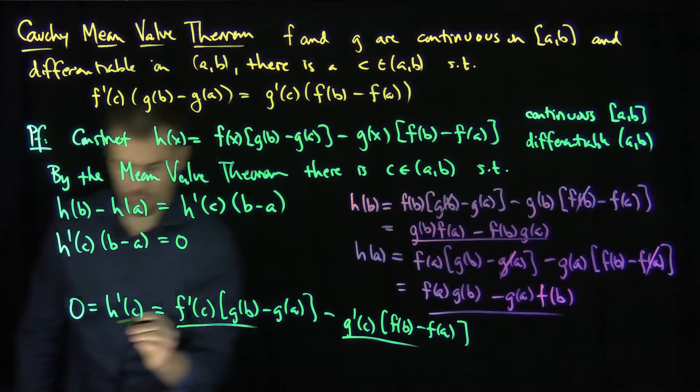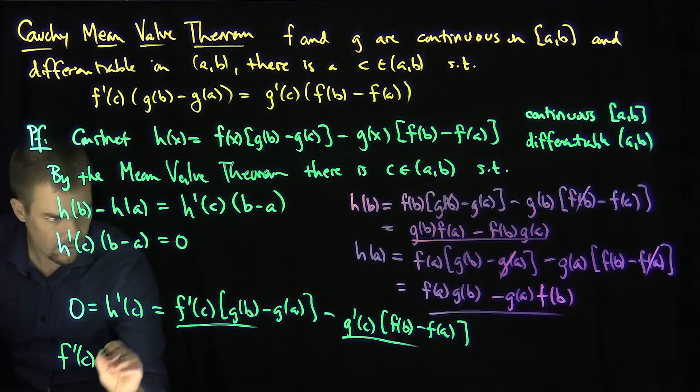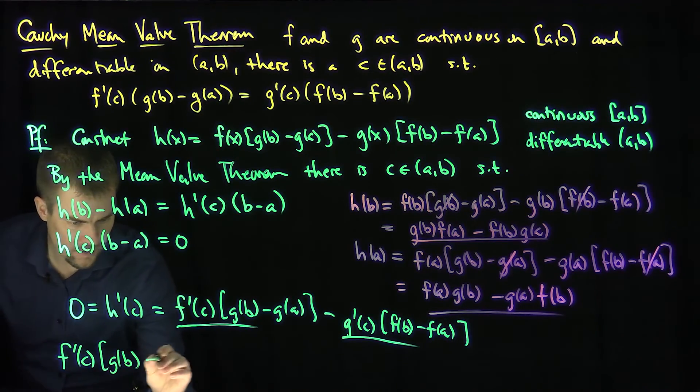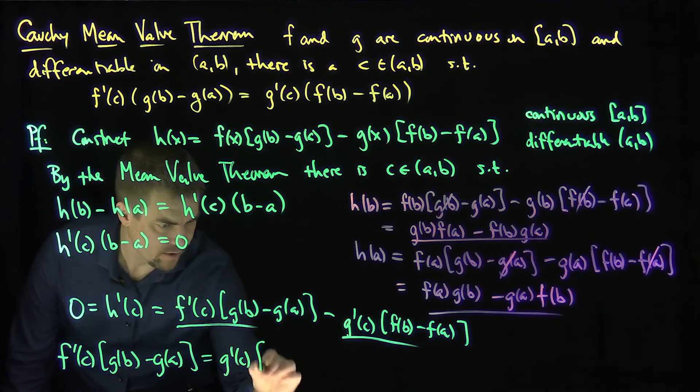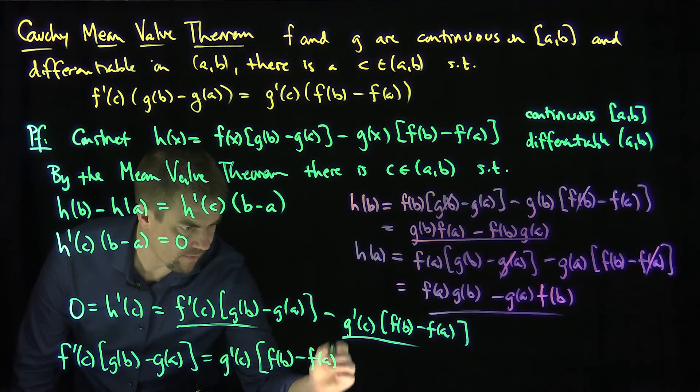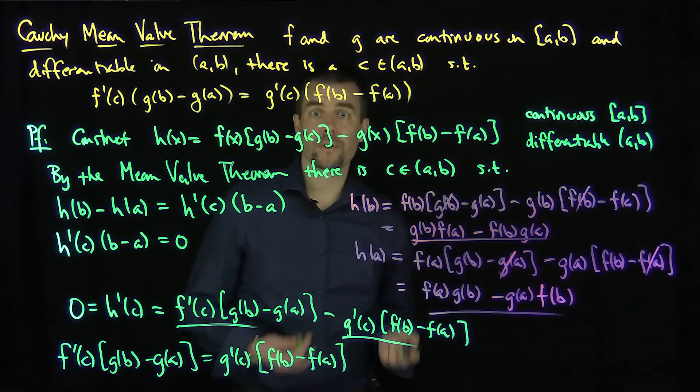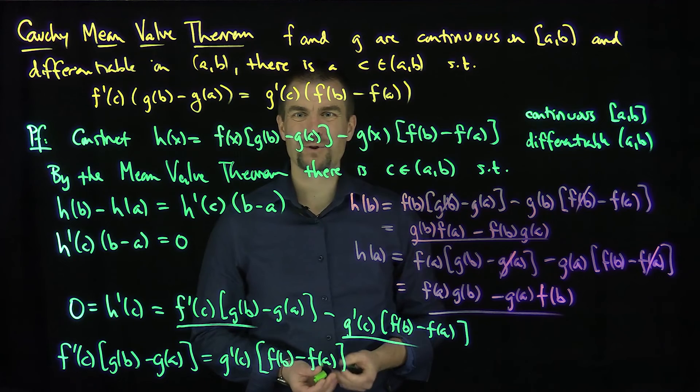Therefore, f'(c) times [g(b) - g(a)] is equal to g'(c) times [f(b) - f(a)]. And that is the proof of the Cauchy Mean Value Theorem. Thank you very much.